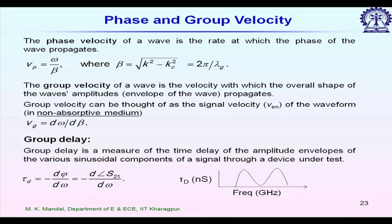The group velocity of a wave is the velocity with which the overall shape, or envelope, of the wave propagates. It can be thought of as the signal velocity of the waveform, but only when there is no loss. Group velocity v_g is given by the partial derivative of omega with respect to beta. Ideally, group velocity should be constant with frequency.